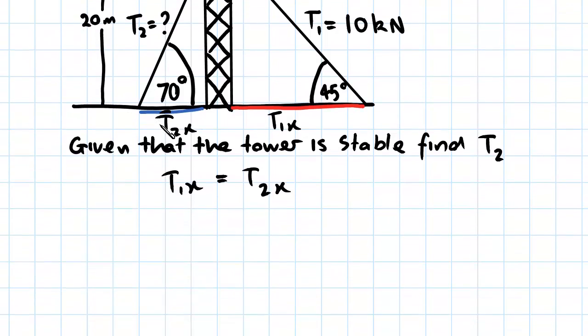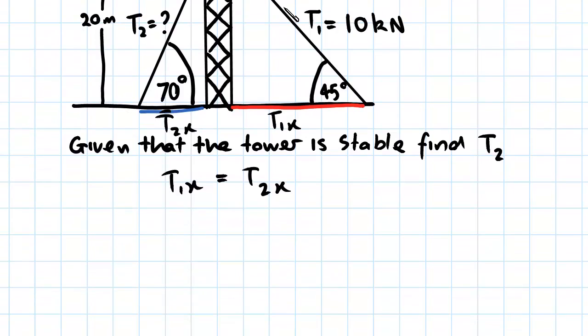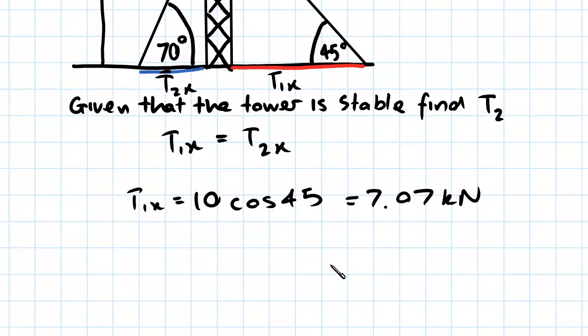Now we can solve for t1x already because we have all of the unknowns. We know t1x equals 10 kilonewtons times cos 45 and if you punch the counter calculator you get 7.07 kilonewtons and we know this equals t2x.